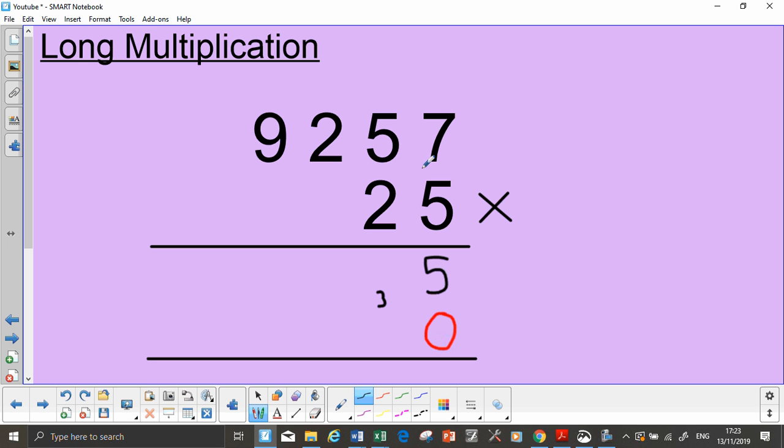Then you need to do 5 times by 5, which is 25. But I've got this 3 down here, so I need to do 25 add 3, so that's going to be 28. My little 2 goes down here.